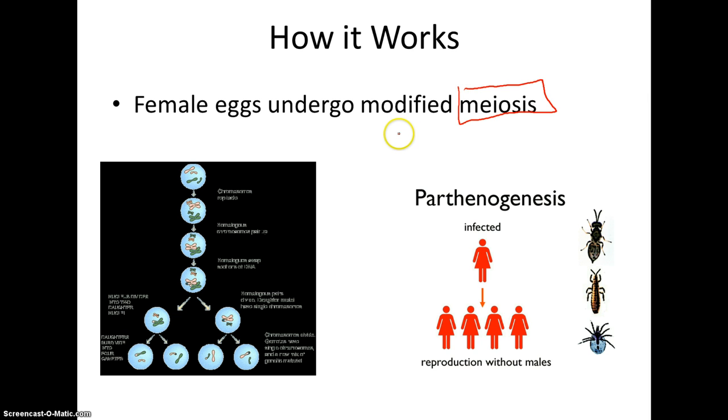What meiosis does is that it produces sex cells. So it produces sex cells, the egg in the female, the egg and the sperm in the male. Now meiosis produces the specialized sex cells, eggs and sperm, which contain half of the DNA of the to-be offspring.